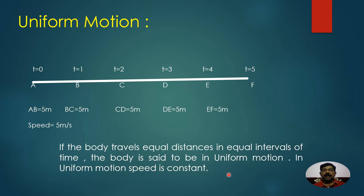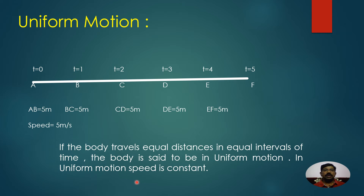How small the time intervals may be - if the body covers equal distances in equal intervals of time, the body is said to be in uniform motion. In uniform motion, the speed of the body is constant.